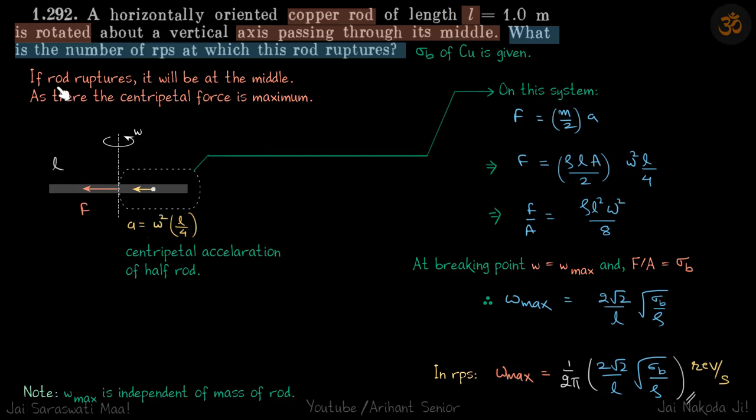So if rod ruptures, it will be at the middle as there the centripetal force is maximum. Whatever part of the rod is getting its centripetal force from the forces in the rod itself. There is no joint here. This rod is just lying on the horizontal table and it's rotating by itself.